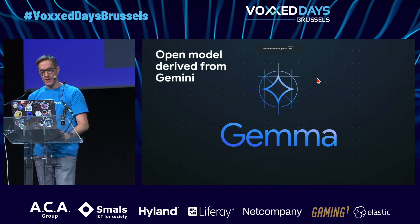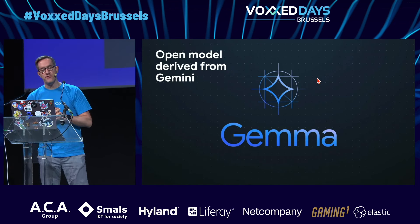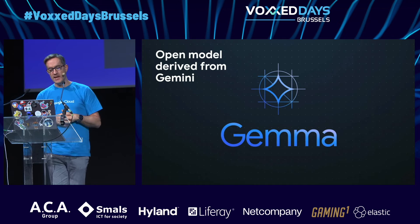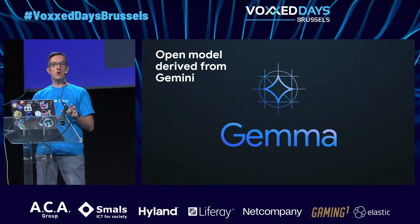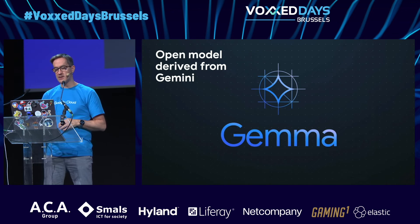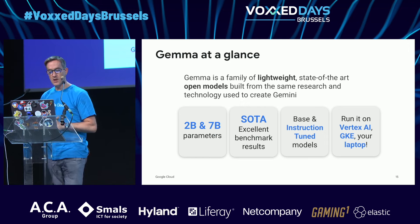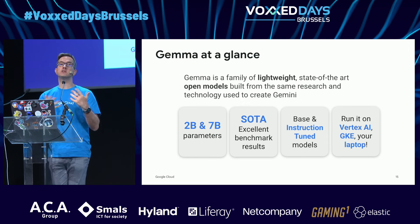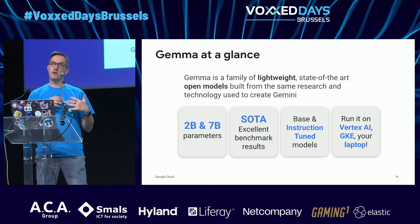I also wanted to mention Gemma. Gemma is a family of models derived from the Gemini models, but it's an open model. Instead of using it from the cloud, you can run Gemma as a small model locally on your machine. We released two-billion and seven-billion parameter models, which show excellent results compared to other small open models. There are base and instruction-tuned versions.